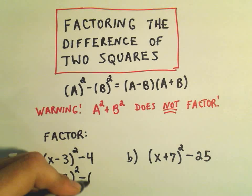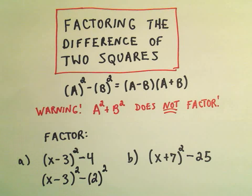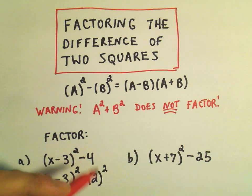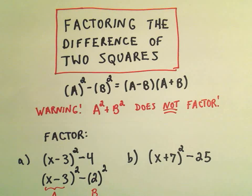I could write 4 as 2 squared. I see two terms and a negative in between them, so it says I can factor them. Our a is going to be the x minus 3, and we have our b as being the 2.